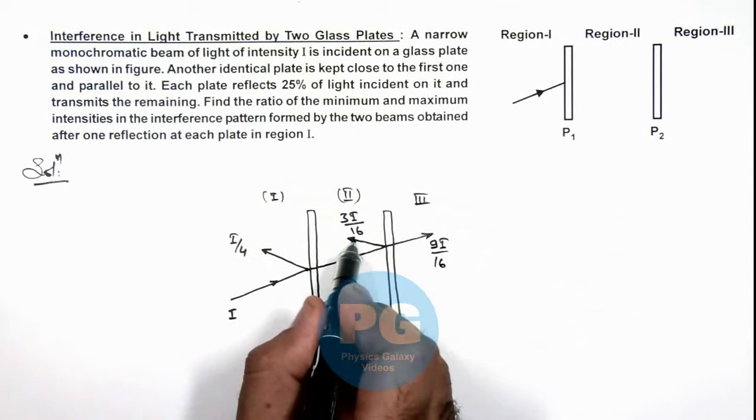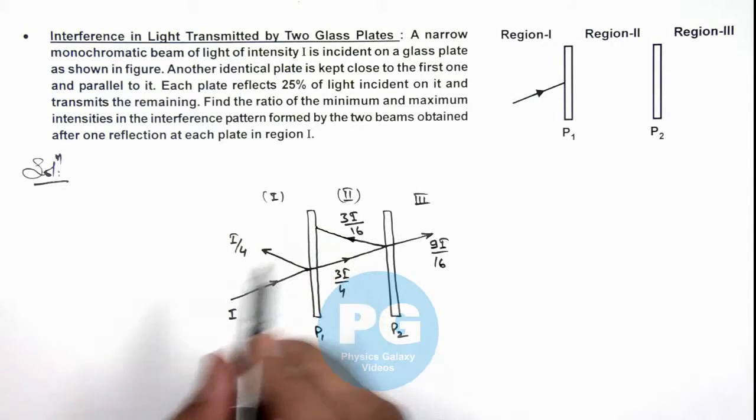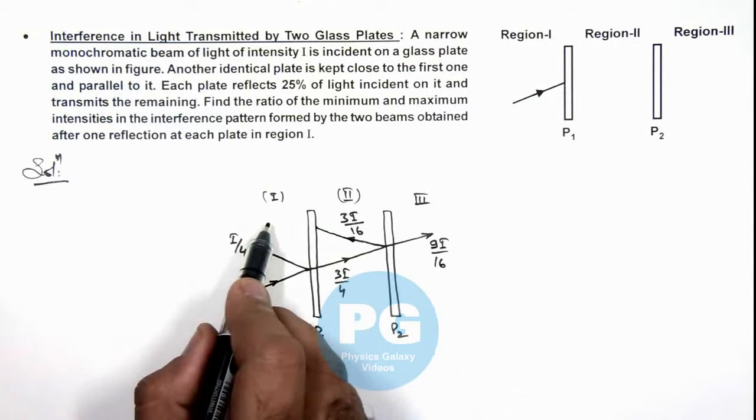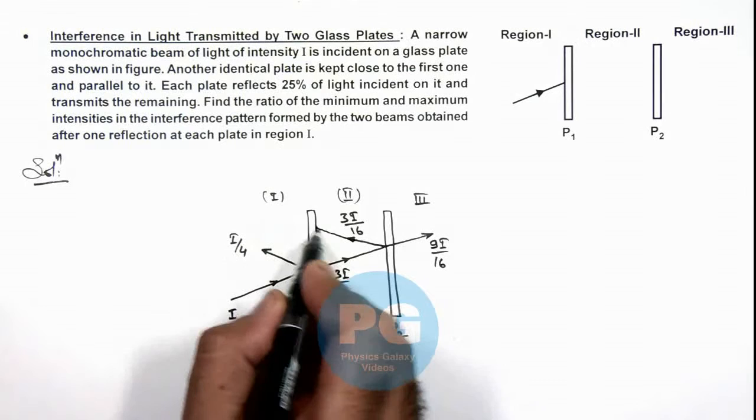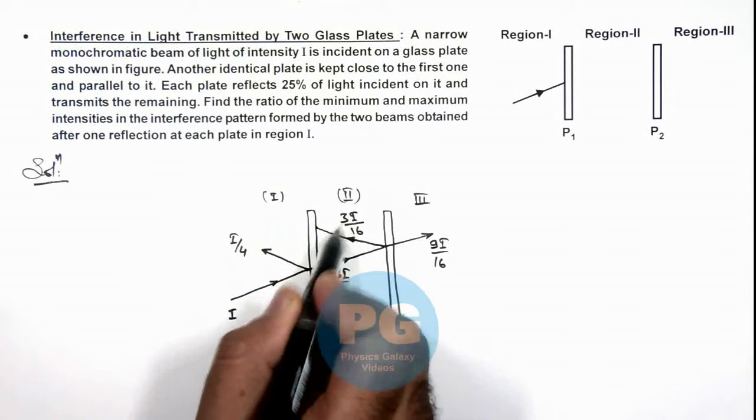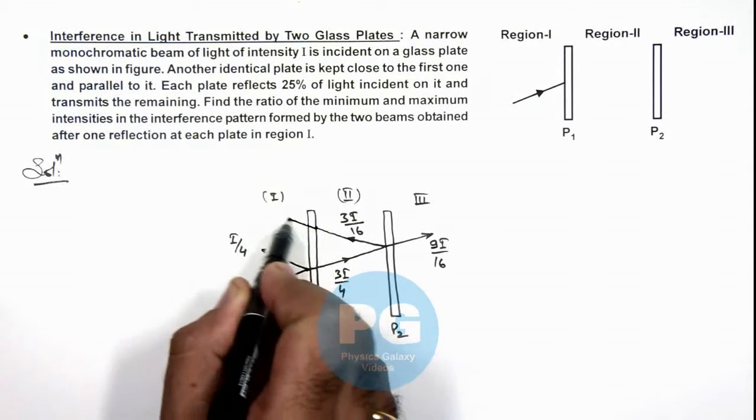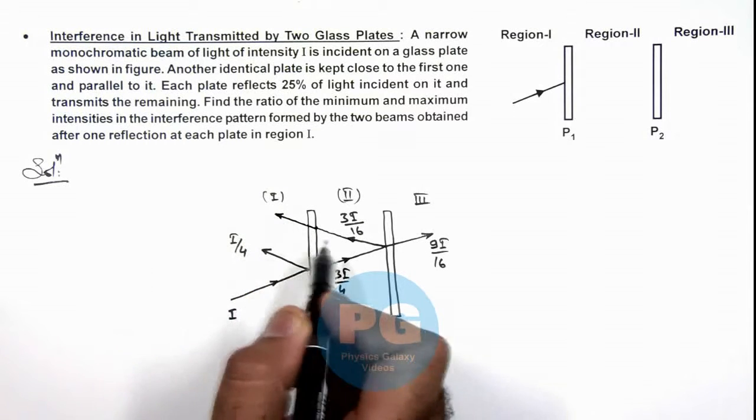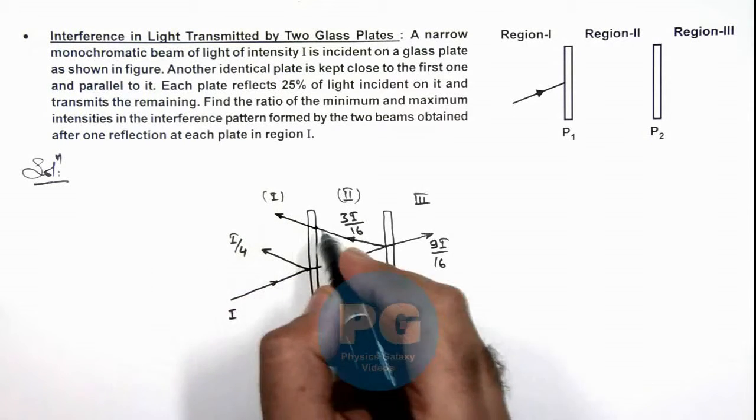When again this light is incident onto plate 1 for passing to region 1, then its 3/4 fraction will pass on because we are given that only 75 percent of light passes, remaining is reflected.